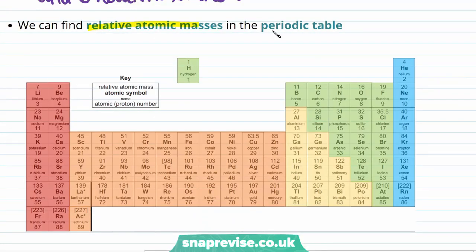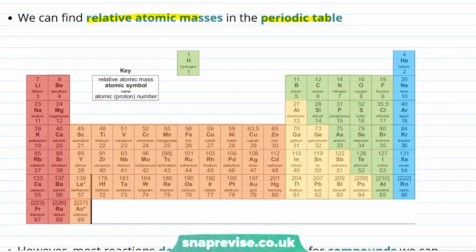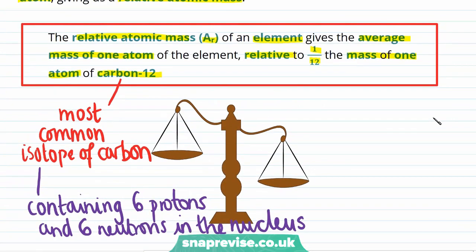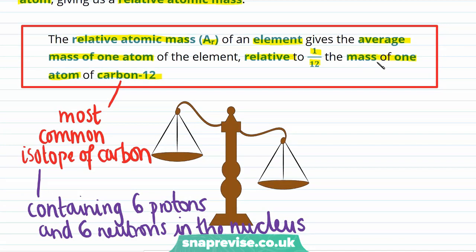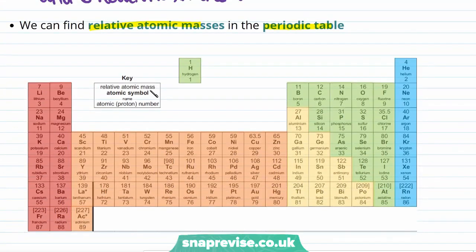We can find our relative atomic masses by using the periodic table. Each block of the periodic table contains the name of the element, as well as its chemical symbol, and then two numbers. The number at the top is the relative atomic mass, and the number at the bottom is the atomic number, or number of protons, in the nucleus of an atom of that element. It's not surprising that carbon has a relative atomic mass of 12, which we can see by finding it in the periodic table and looking at the top number, which will be the larger number out of the two. We can also see that oxygen has a relative atomic mass of 16, and neon has a relative atomic mass of 20.